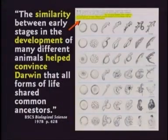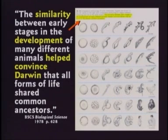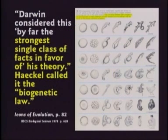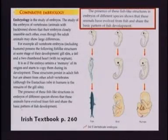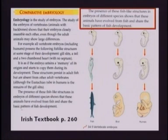This book says the similarity between early stages in development helped convince Darwin that all forms of life shared common ancestors. Darwin considered this by far the strongest piece of facts in favor of his theory. Haeckel called it the biogenetic law. A guy named Ernst Haeckel made up the idea that all the embryos of different animals developed through the same stages — fish, amphibian, reptile, mammal.